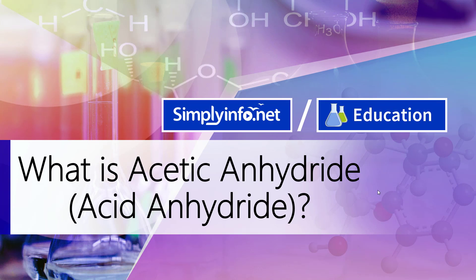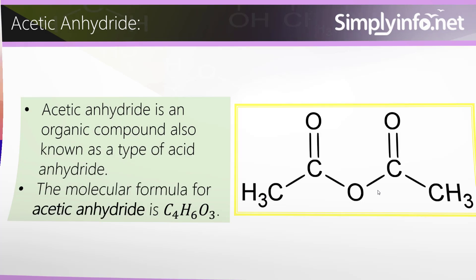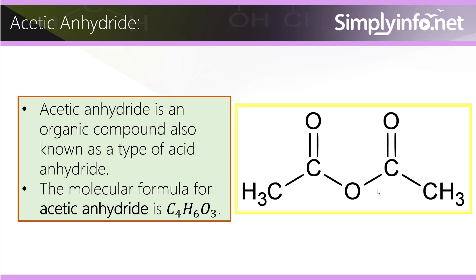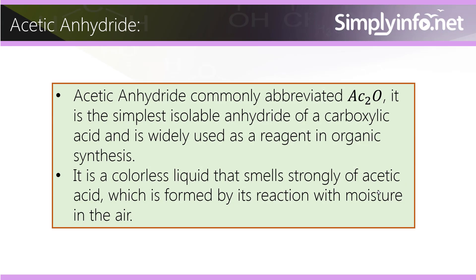What is Acetic Anhydride? Acetic Anhydride is an organic compound also known as a type of acid anhydride. The molecular formula for acetic anhydride is C4H6O3. Acetic Anhydride, commonly abbreviated AC2O, is the simplest isolable anhydride of a carboxylic acid and is widely used as a reagent in organic synthesis.